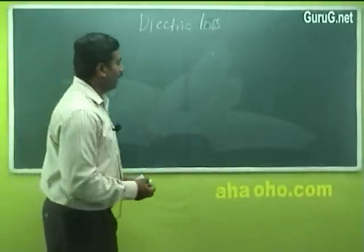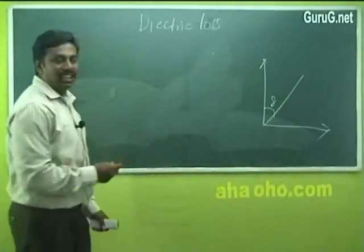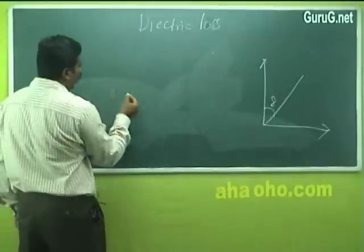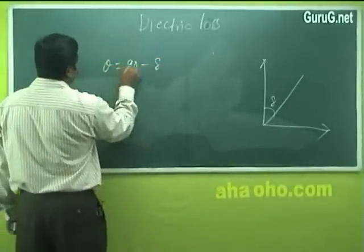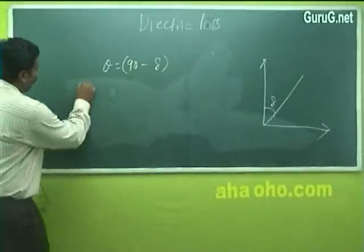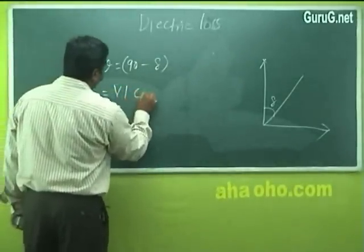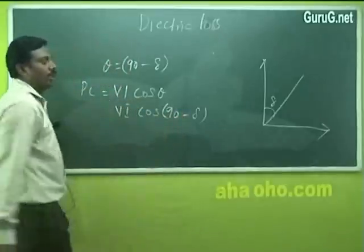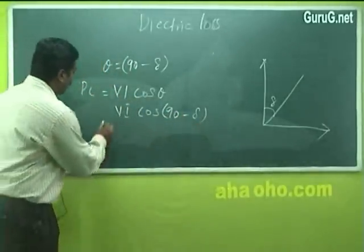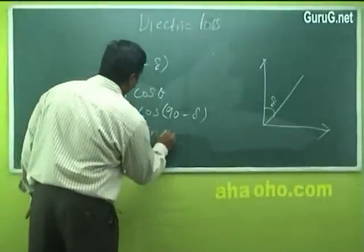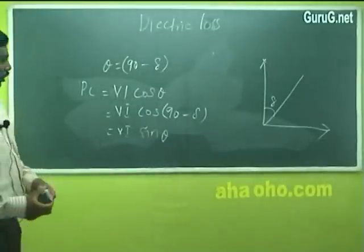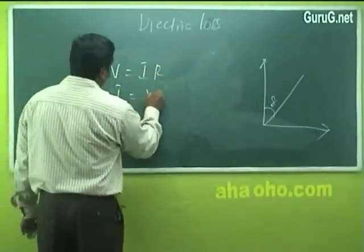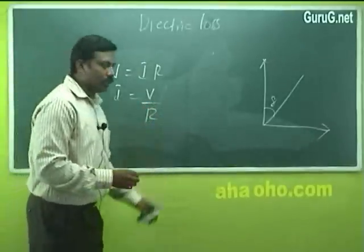In practical capacitors, the current does not lead the voltage exactly by 90 degrees; instead it leads by 90 minus delta (δ). So θ = 90 − δ. Therefore, power loss PL = VI cos(90 − δ) = VI sinδ. From Ohm's law, V = IR, so I = V/R, where I is current, V is voltage, and R is resistance.